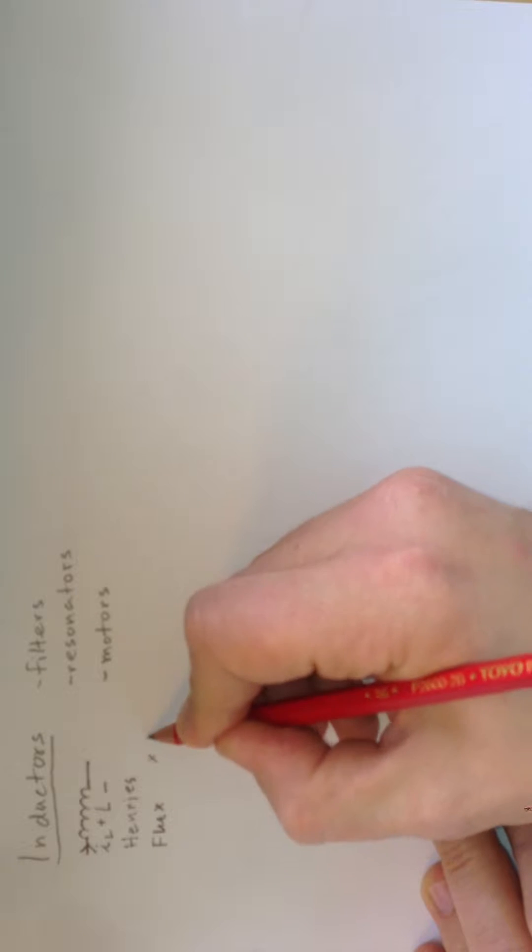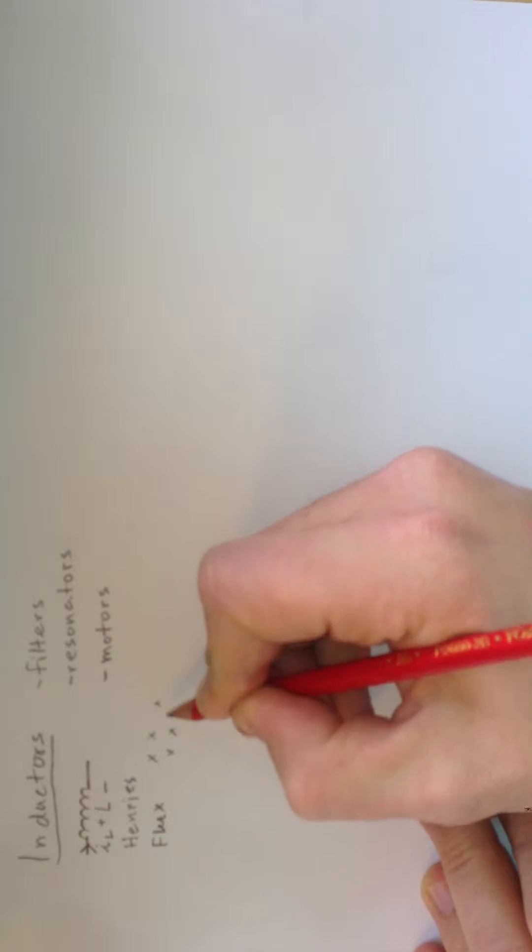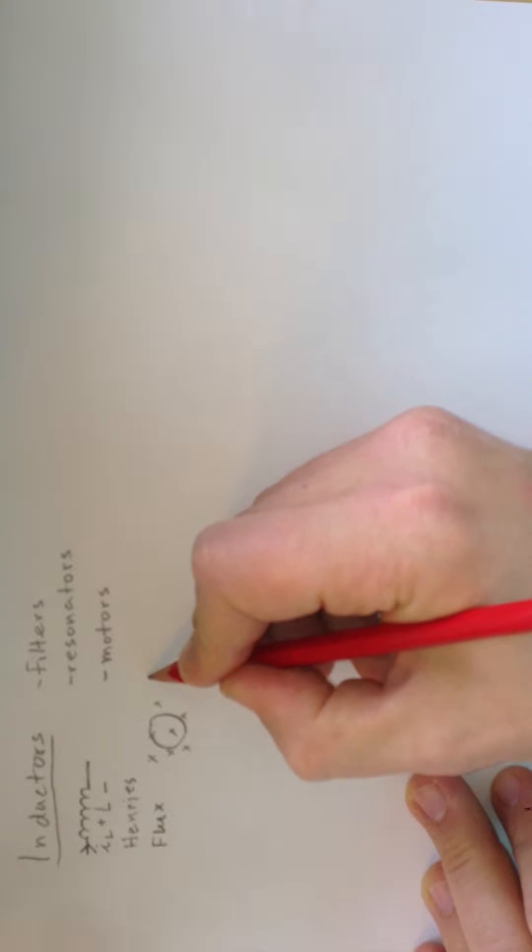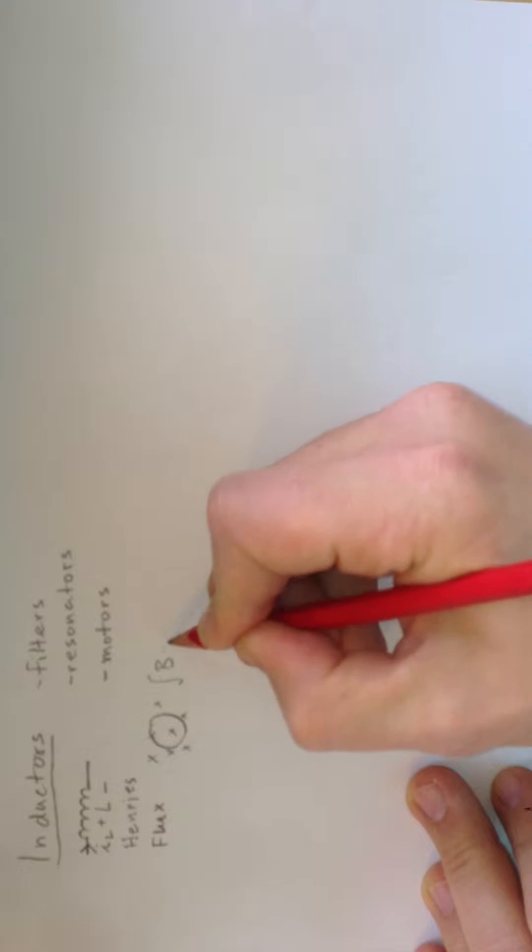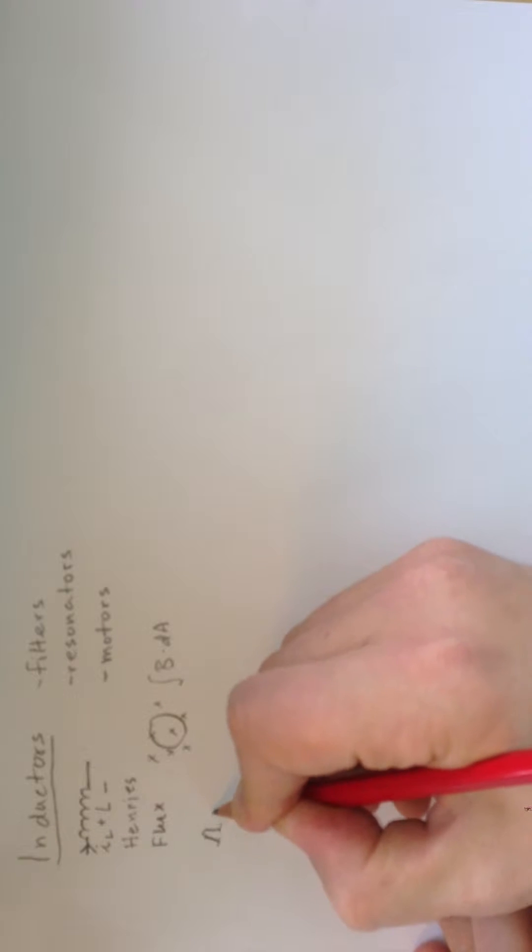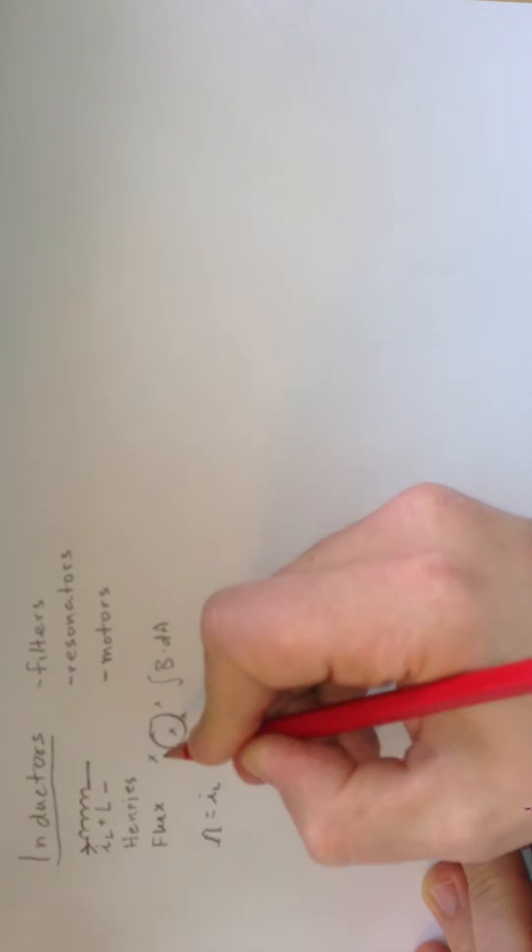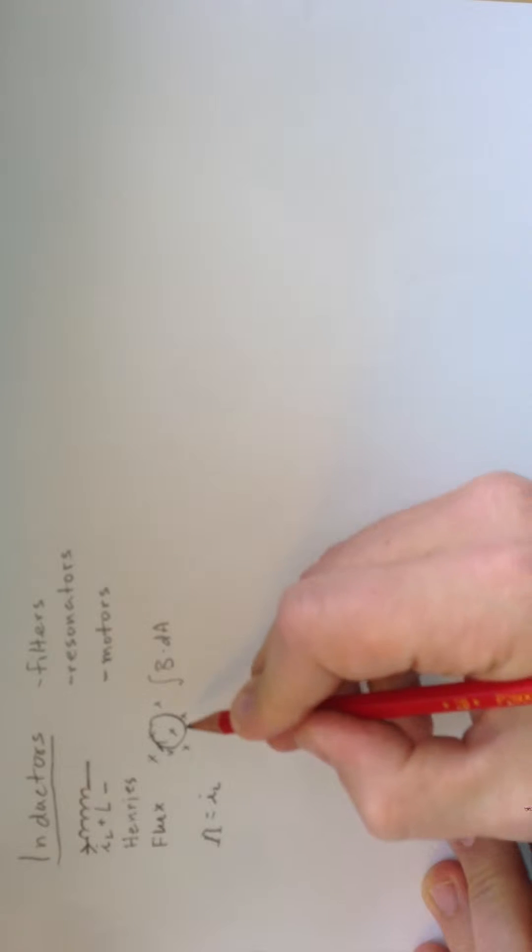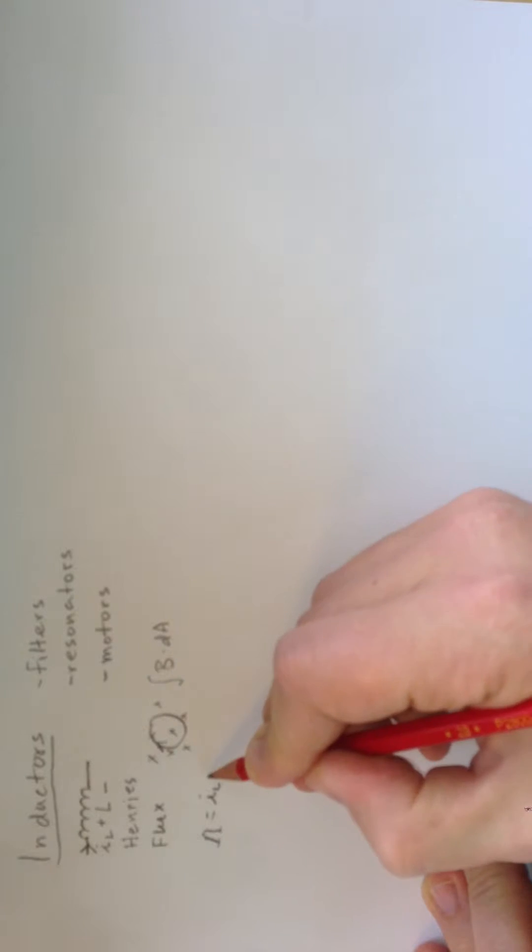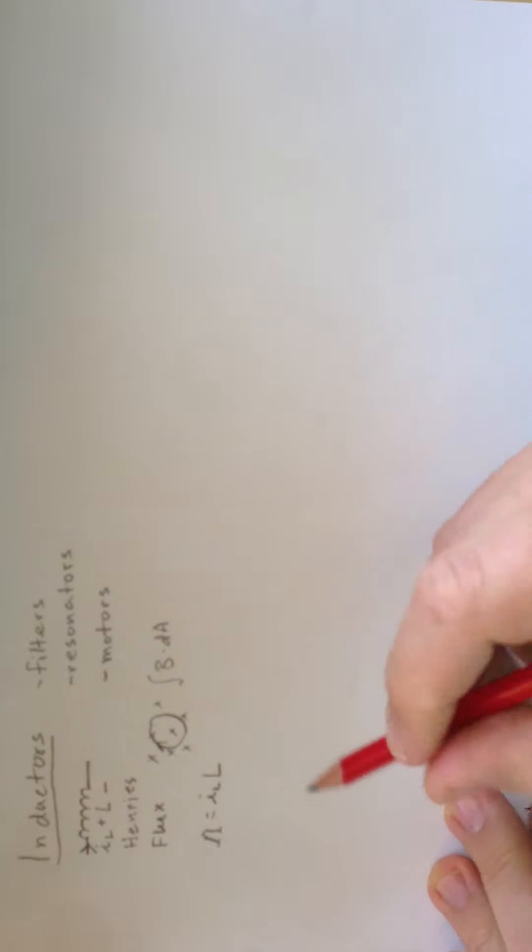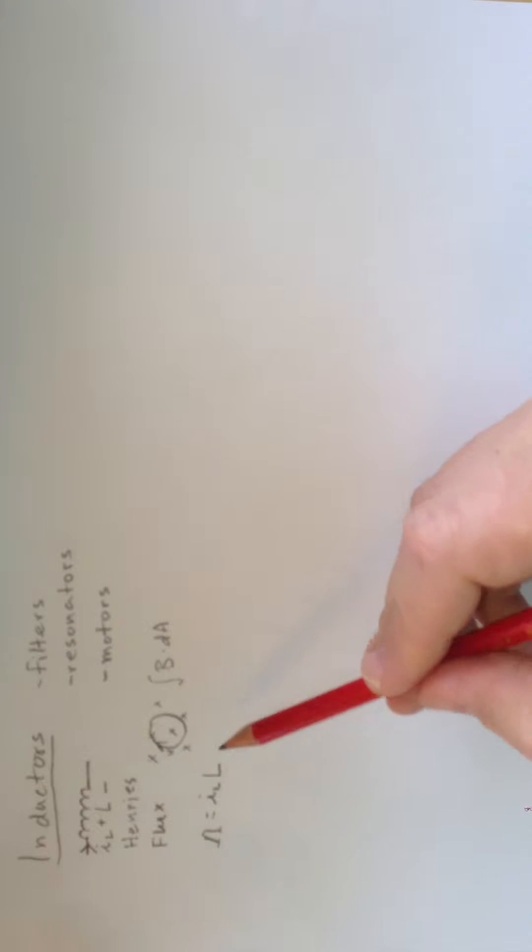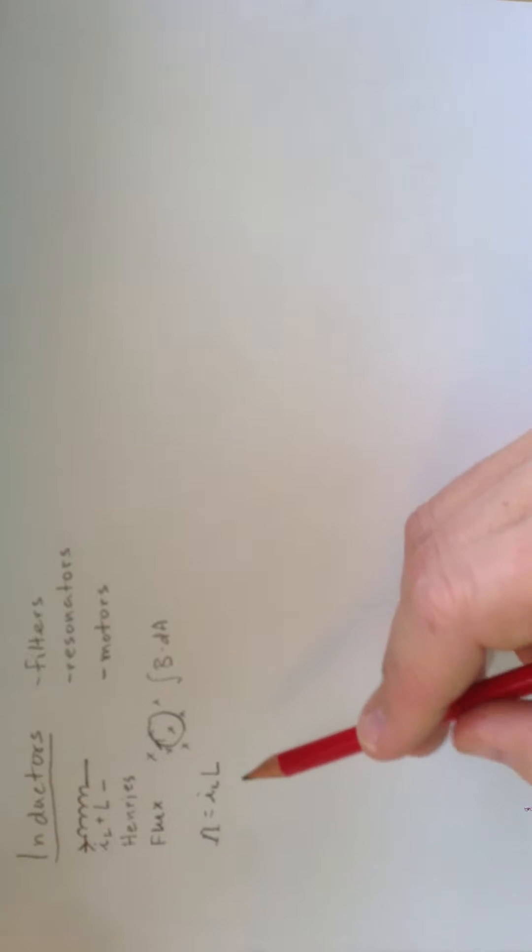Flux is basically a magnetic field contained within an area, so if these represent lines of magnetic field going into the page, then we select an area, and the flux is the integral of the magnetic field over that area. You can make flux larger by either increasing the current that's generating the magnetic field, or you can make flux larger by increasing the area, which is proportional to the inductance. That's frequently represented as either the area of the solenoid, but also the number of turns of the solenoid effectively increases the area.